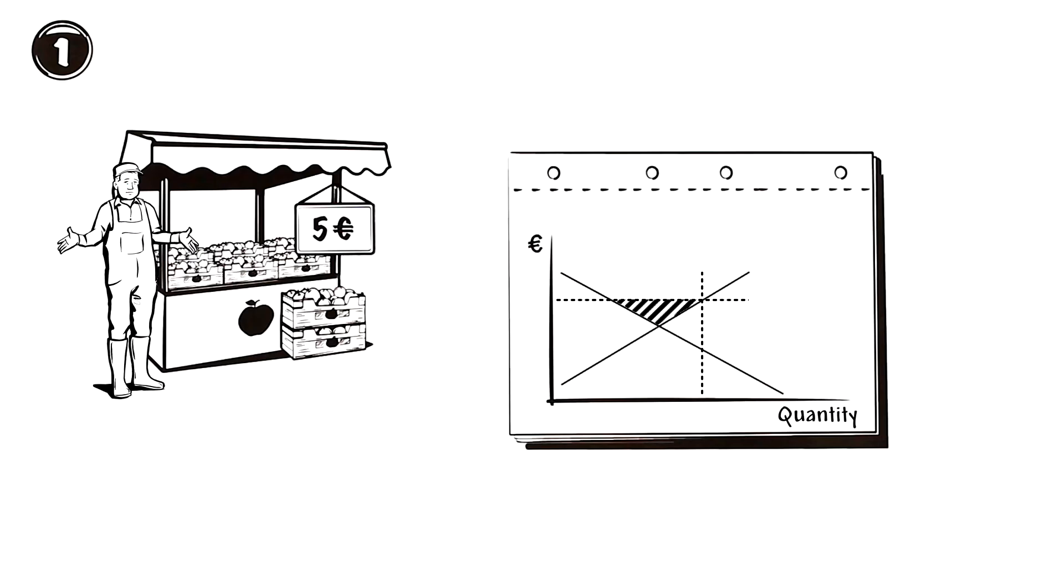In order to avoid making a loss, he is now forced to lower his price. The process of price adjustment enters round two.